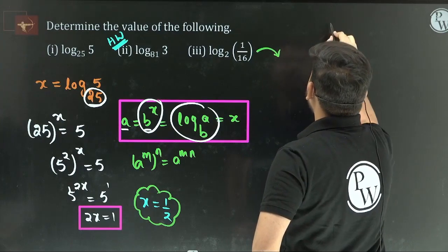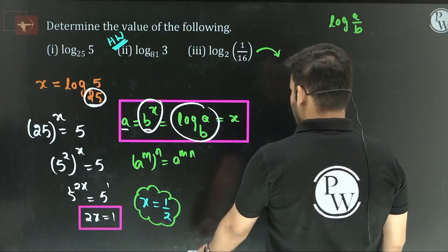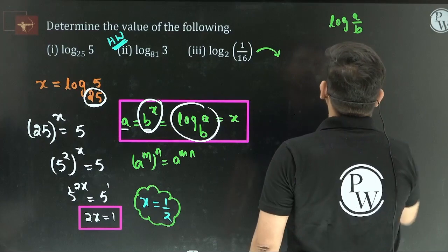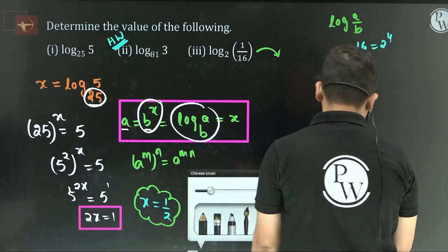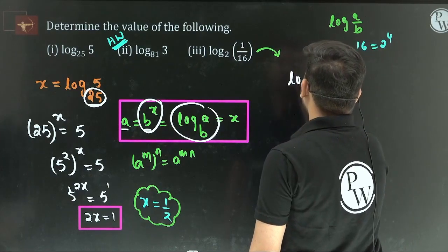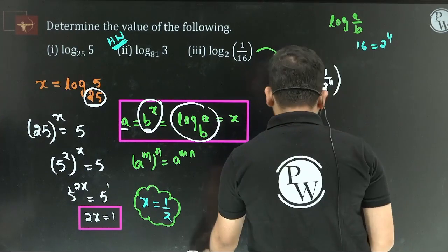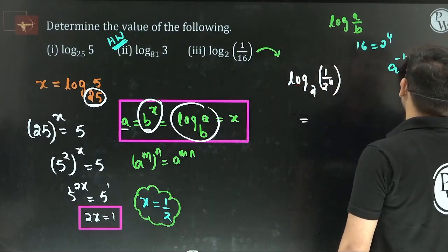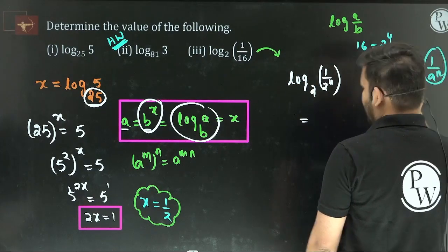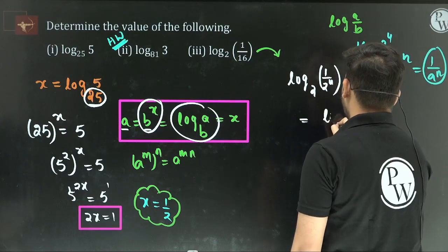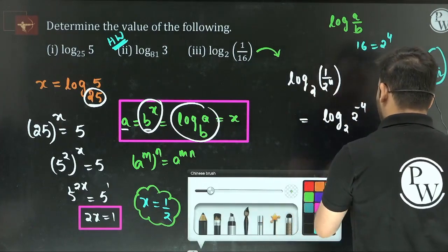So this logarithm — find the value. Is this in a to the power of e format, or log A by B format? We can rewrite 1 by 16. Now, 16 can be written as 2 to the power of 4. Also, remember: e to the power of minus n can be written as 1 by e to the power of n. So log base 2 of 1 by 16 — we write 2 to the power of 4, and with the negative, it becomes 2 to the power of minus 4. Problem is almost done.